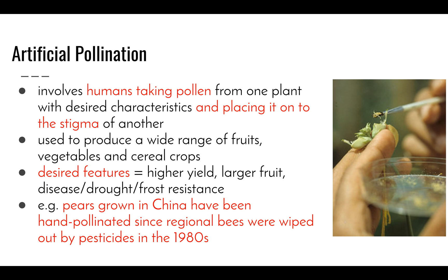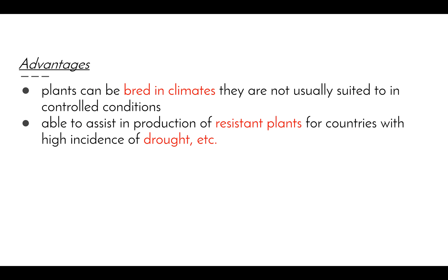An example: pears grown in China have been hand pollinated since regional bees were wiped out by pesticides in the late 1980s. This is a serious issue — bees have become highly endangered and the problem may spread beyond China as wild bee populations have reduced considerably. Advantages include producing plants that can be bred in climates they're not usually suited to, and growing resistant plants for countries with high incidence of drought.